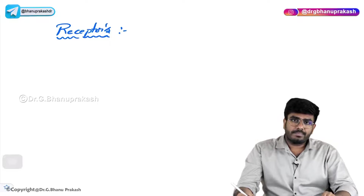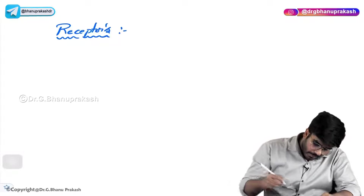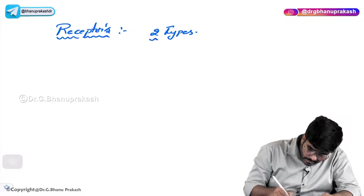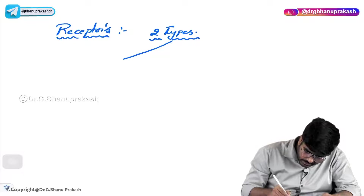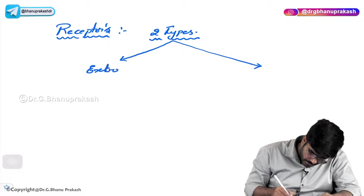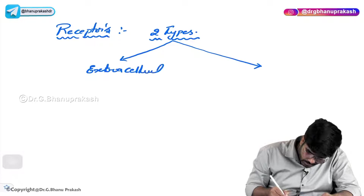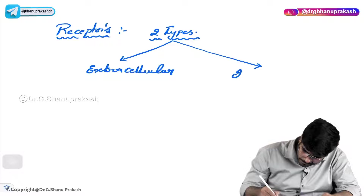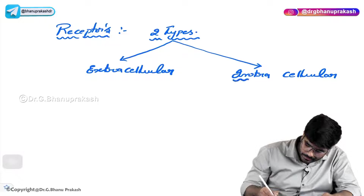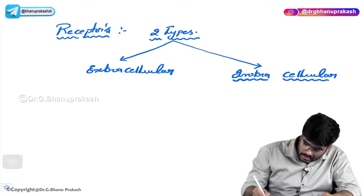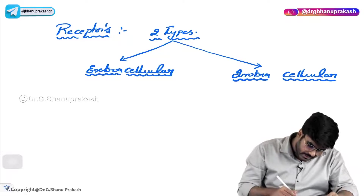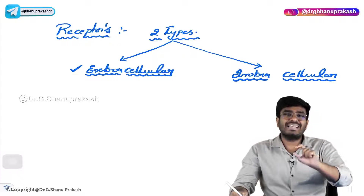Now these receptors are of how many types? Broadly these receptors are classified into two types: intracellular receptors or extracellular receptors. If a receptor is present on the cell surface, on the cell membrane, then it is called as an extracellular receptor or cell surface receptor.